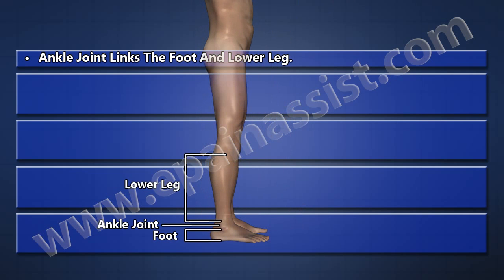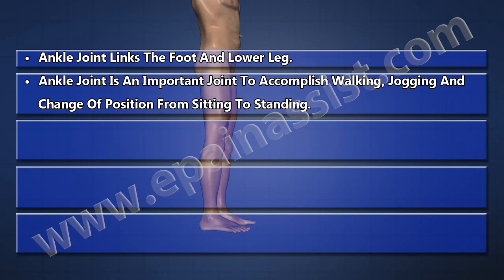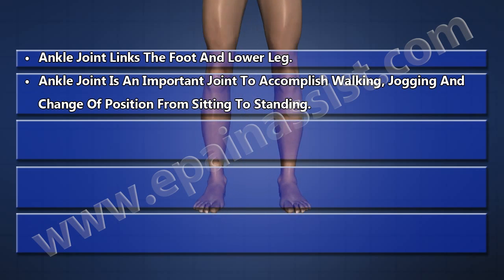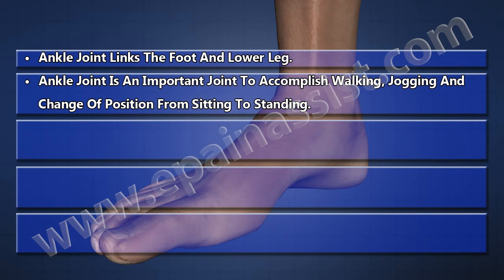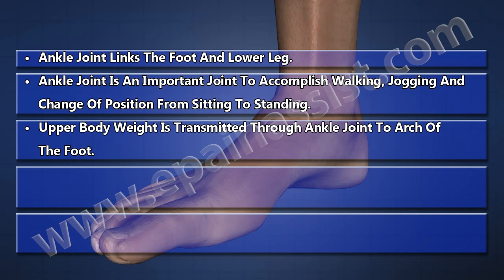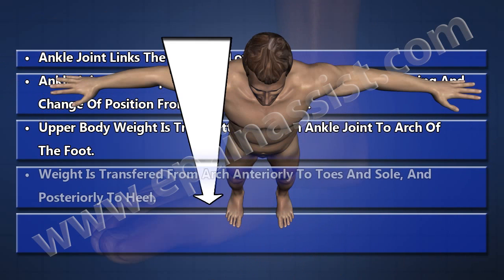Ankle joint link: foot and lower leg. The ankle joint is an important joint to accomplish walking, jogging, and change of position from sitting to standing. Upper body weight is transmitted through the ankle joint to the arch of the foot. Weight is transferred from the arch anteriorly to the toes and sole, and posteriorly to the heel.